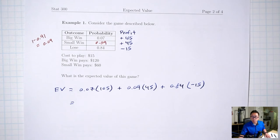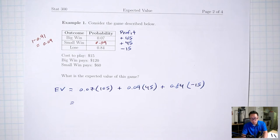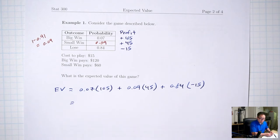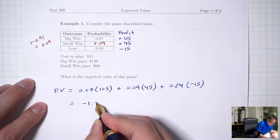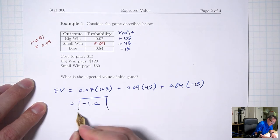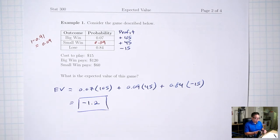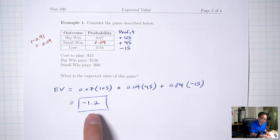On a calculator: 0.07 times 105 plus 0.09 times 45 plus 0.84 times negative 15 equals negative 1.2. If you're playing this game many thousands of times, on average each time you're playing you are losing $1.20.